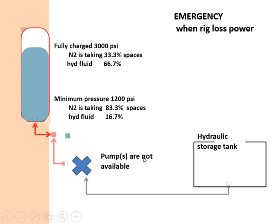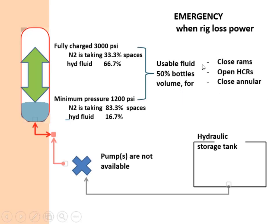and the pumps become unavailable, to ensure that the BOP can be closed in emergency conditions. The useful volume is the amount of fluid that can be forced out from the bottle by expanding the nitrogen from 3000 PSI maximum pressure,